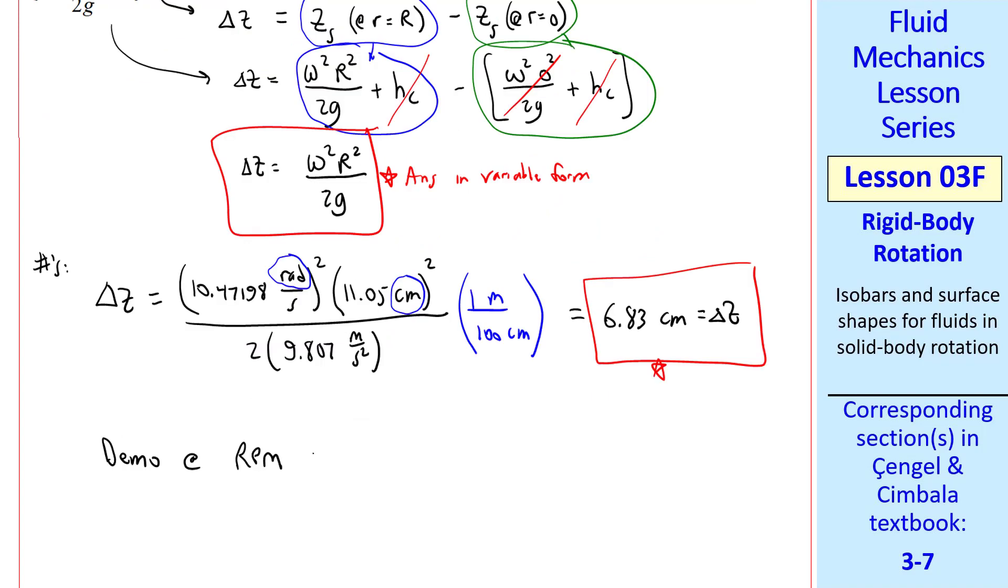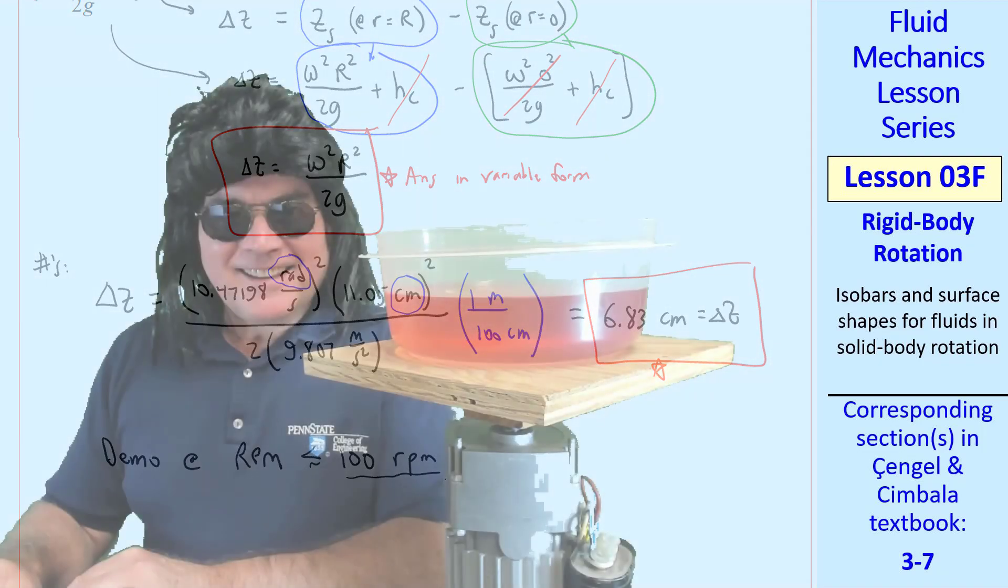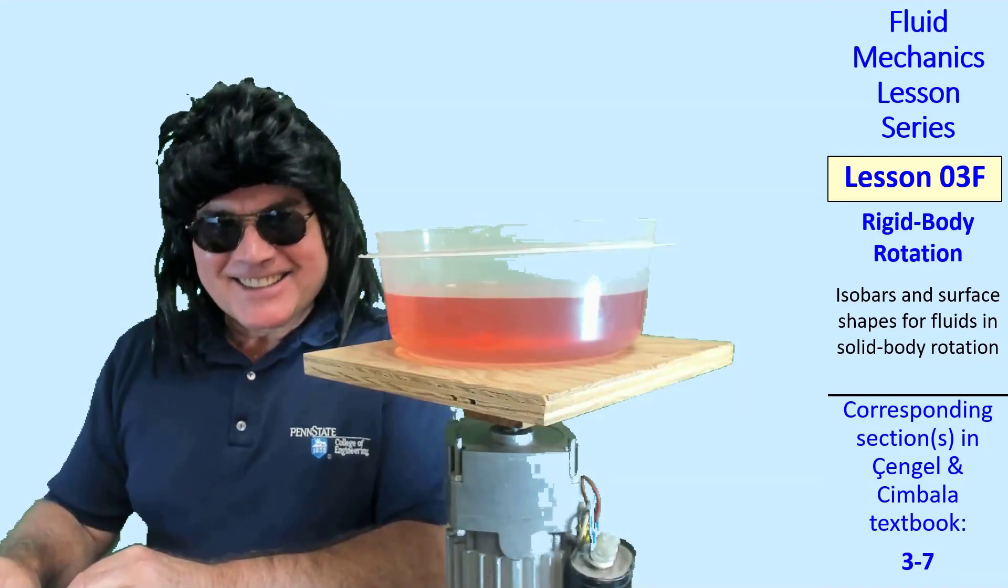My student, Joe's student, will demonstrate with a rotating container on a motor, which is advertised as rotating at 100 rpm, but it really goes a little bit slower than that. Okay, Joe, show the demo. Okay, dude, let's turn this baby on.